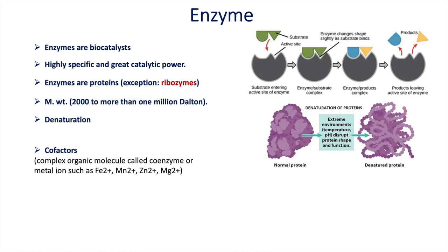Some enzymes remain in an inactive form, but when they bind with certain organic molecules — called coenzymes — or when they bind with metal ions such as iron, manganese, zinc, or magnesium, these inactive enzymes are converted into active enzymes. These organic molecules and metal ions that activate inactive enzymes are called cofactors.